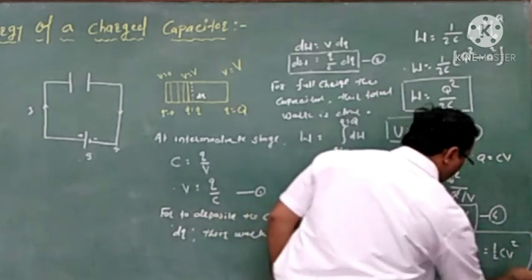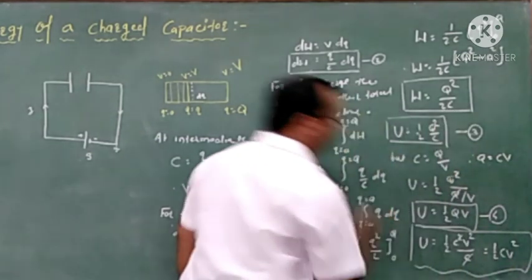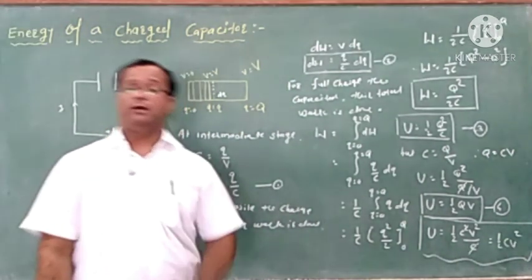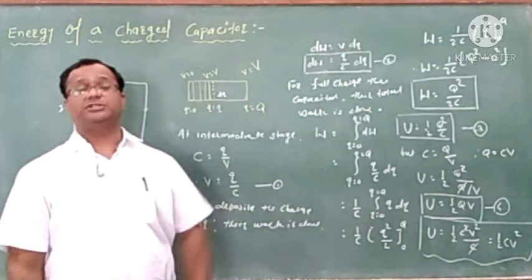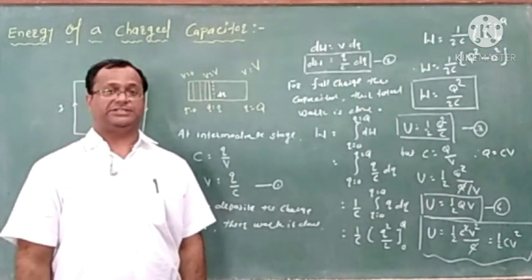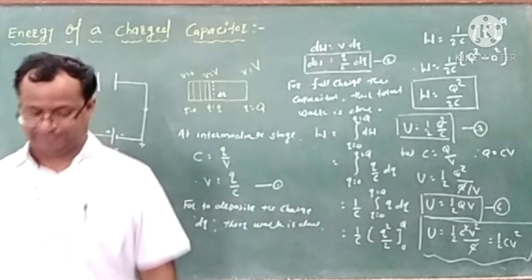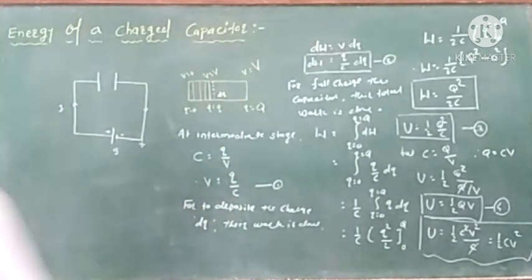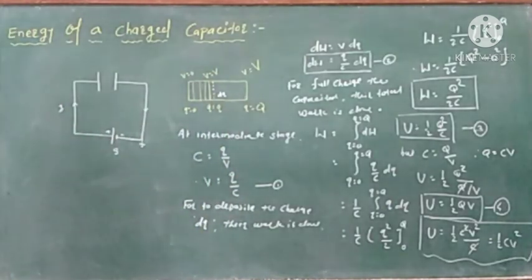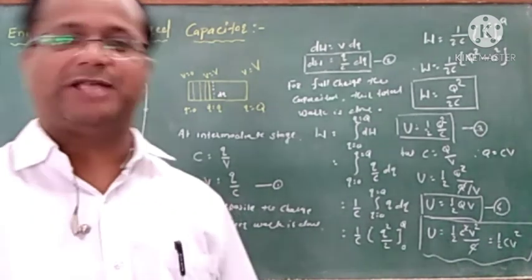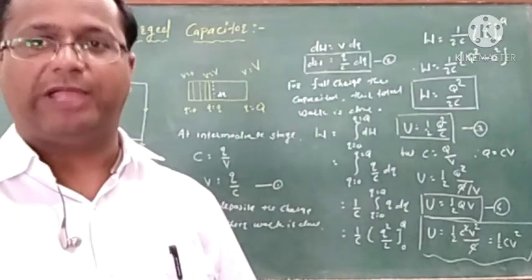We can also get further forms by substituting Q equals CV into these equations, relating all the equations at once. So this is about the energy of a charged capacitor. Thank you.